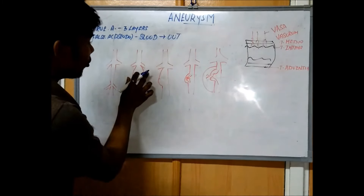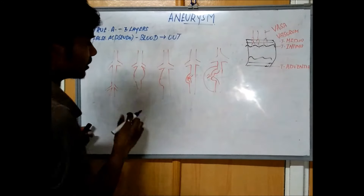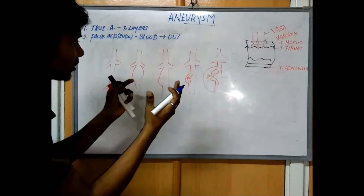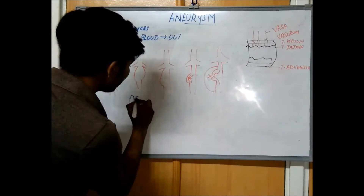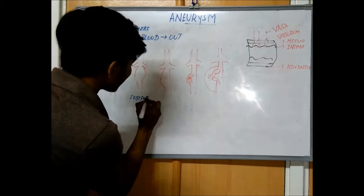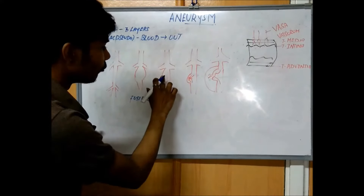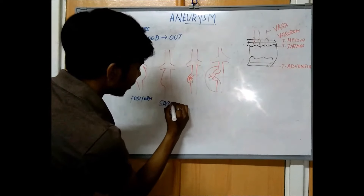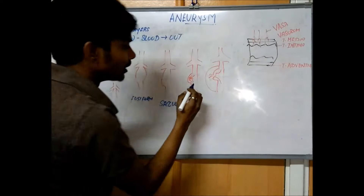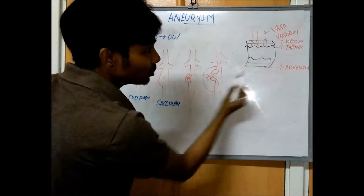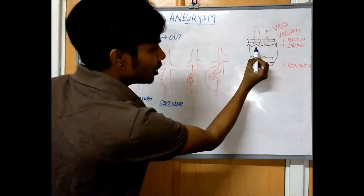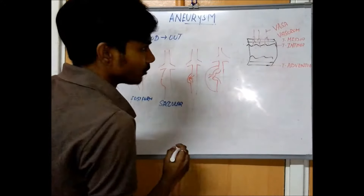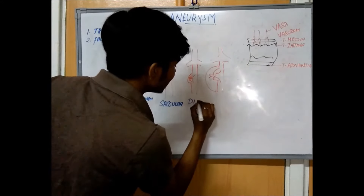When both sides of the wall of the blood vessel are weakened, it causes a bulge on two sides, which is called fusiform. When only one side of the wall is weakened, it is called saccular. There is also a type where trauma to the tunica intima causes blood to go into the tunica media and form a thrombus, which is called dissecting aneurysm.